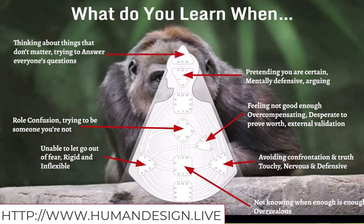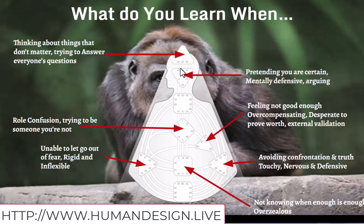Thinking about things that don't matter — this affects the top 70% of the population who are undefined here. This is the top when it comes to the number of people you could persuade or engage with about what is interesting or inspiring. The not-self thinks about things that don't matter to it, tries to answer everybody's questions, gets lost and confused. Confusion and doubt — that's what we're under right now with this current transit. When you let go of the confusion and doubt, what happens? It's inspiring.